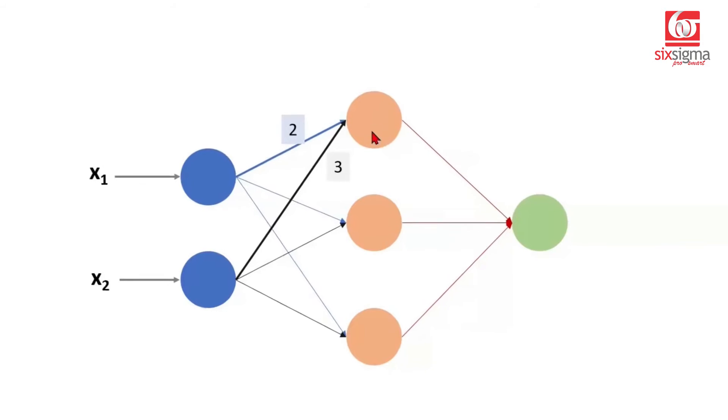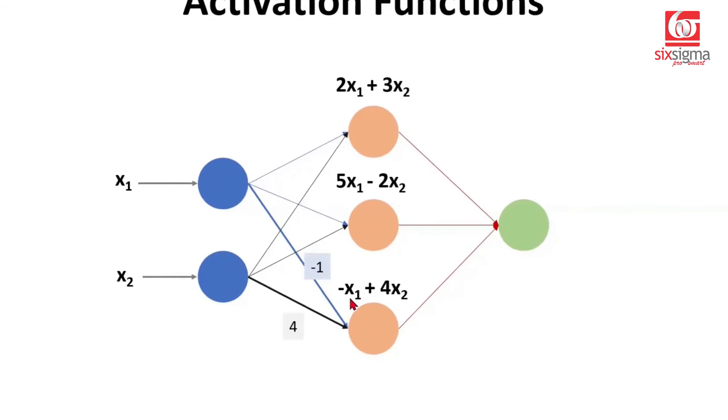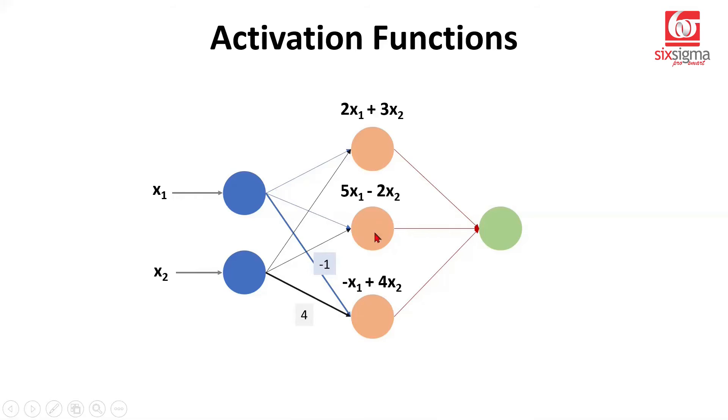If you look at the first neuron of the hidden layer, it's receiving two inputs from the first and second input neurons with these weights. So if we just do the aggregation here, we'll be getting something like 2x1 + 3x2. Likewise, if we concentrate on the second neuron, it's again getting two inputs: 5x1 - 2x2. And the third neuron: -x1 + 4x2. So this is where we are and we don't have any activation right now. We simply are doing aggregations.